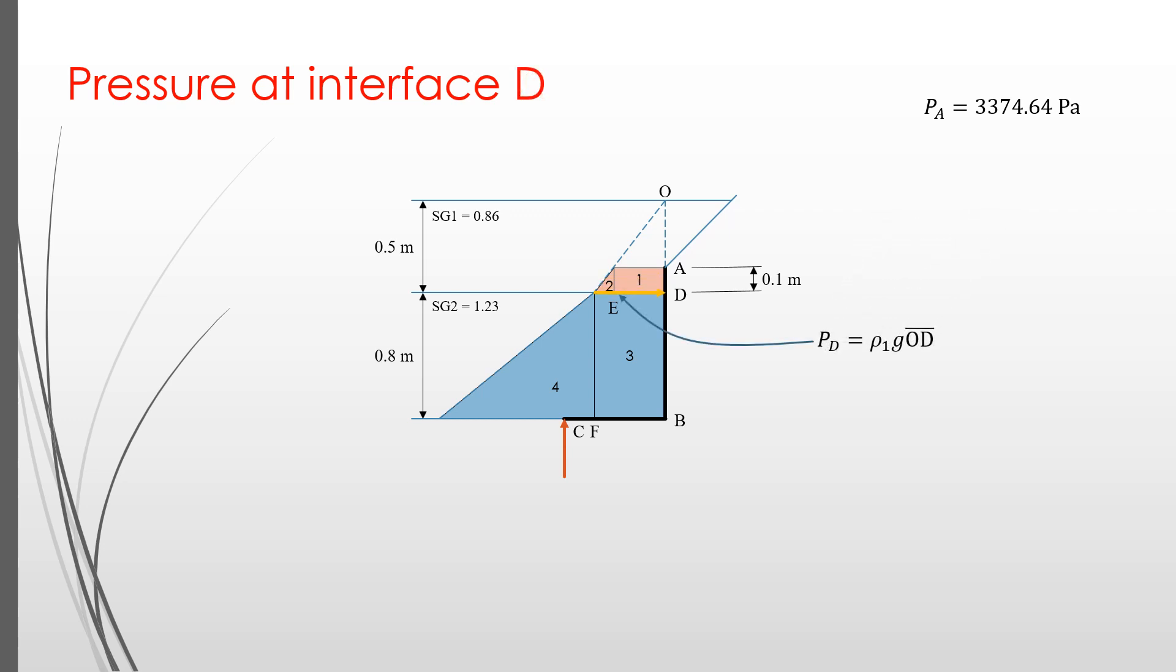At horizontal surface D, which is at the depth of OD equals 0.5 meters, the pressure is ρ₁ times g times OD. The value of this pressure is the same with the lower part of the rectangle 3. We obtain PD equals 4218.3 Pascal.